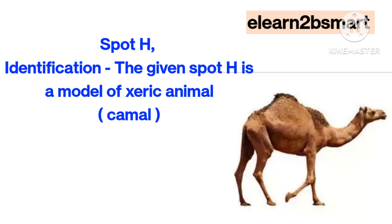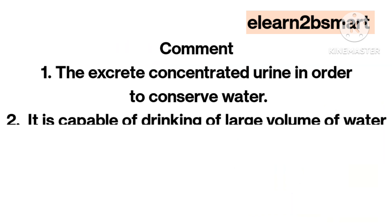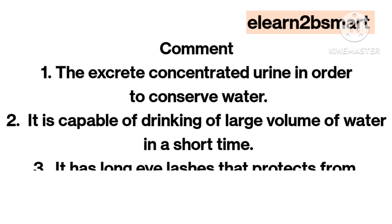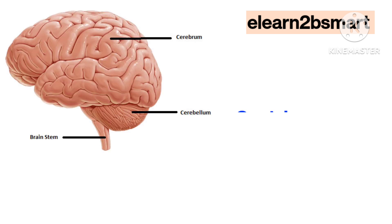Spot H. Identification: The given spot H is a model of a xeric animal, the camel. Comment 1: They excrete concentrated urine in order to conserve water. They are capable of drinking a large volume of water in a short time. They have long eyelashes that protect from sand or strong winds.